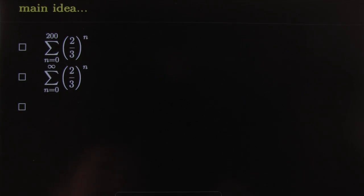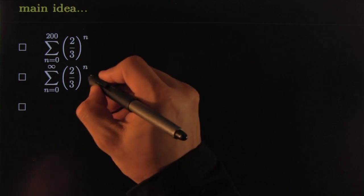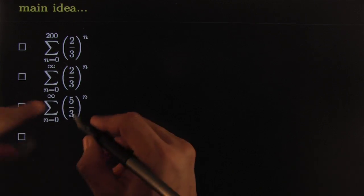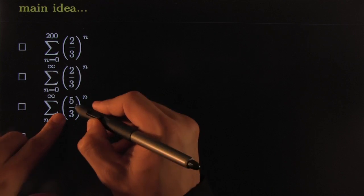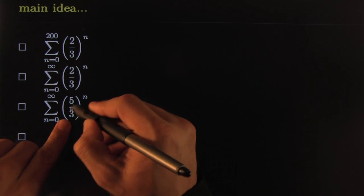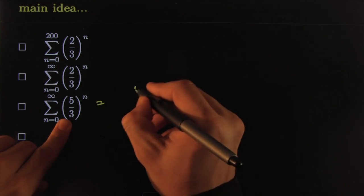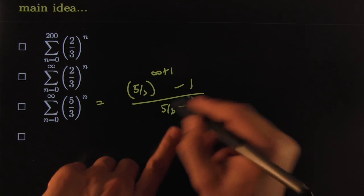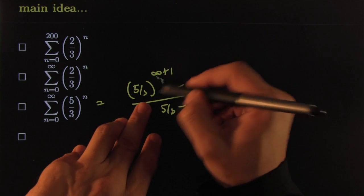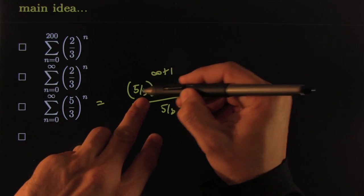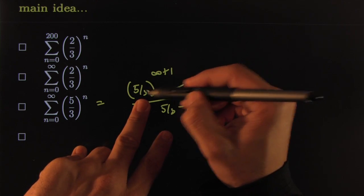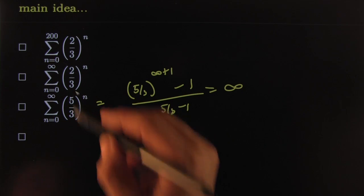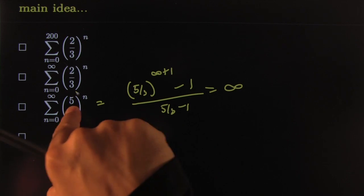This converges, but what about five-thirds? The difference is that this number is larger than one, so it diverges. Writing it out: five-thirds raised to infinity plus one, minus one, over five-thirds minus one. The denominator is some constant, but five-thirds is larger than one so this piece grows uncontrollably to infinity — the series diverges. The culprit is the ratio being larger than one.